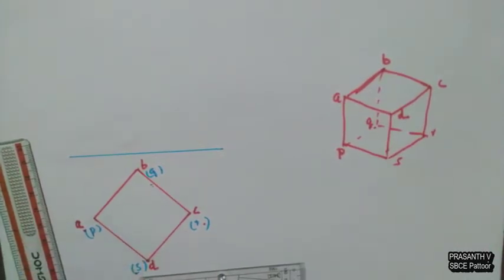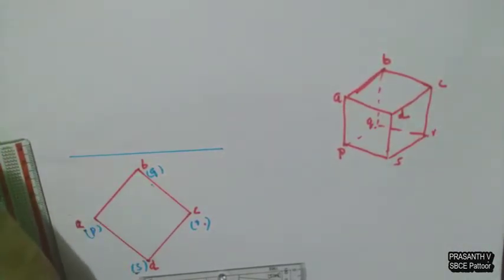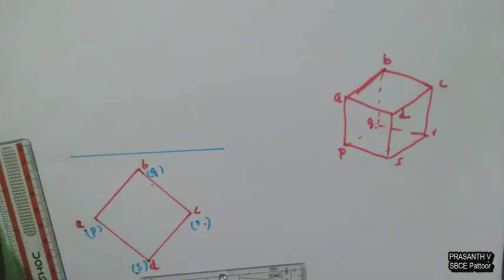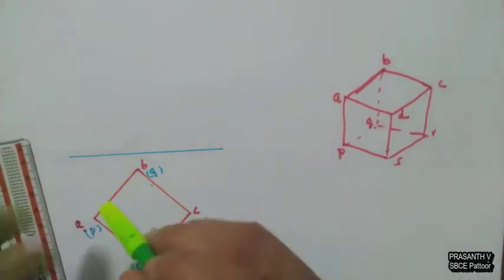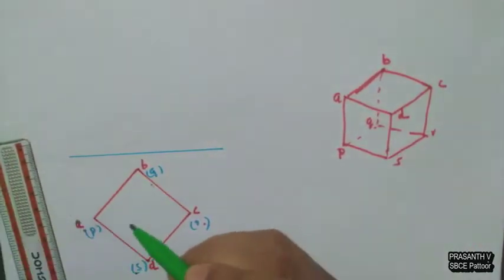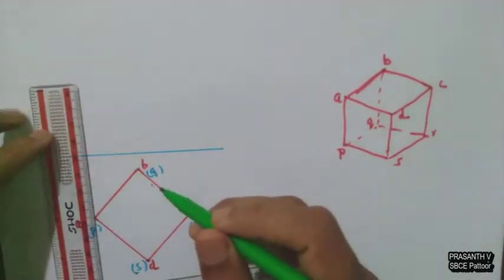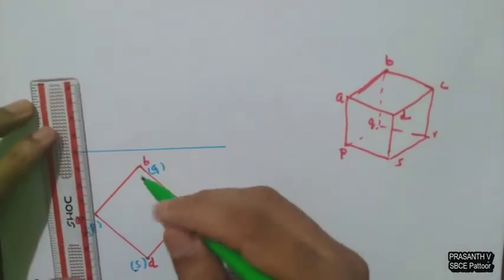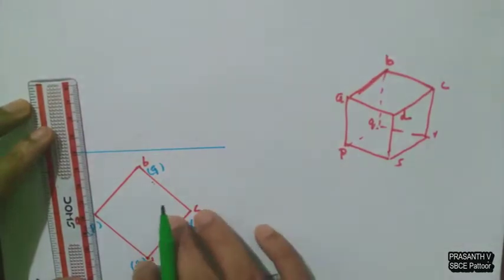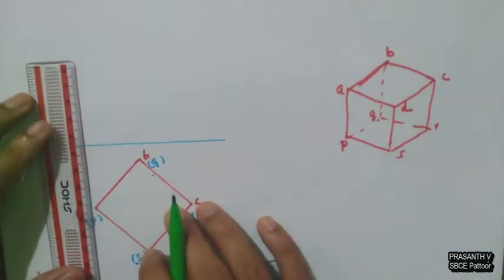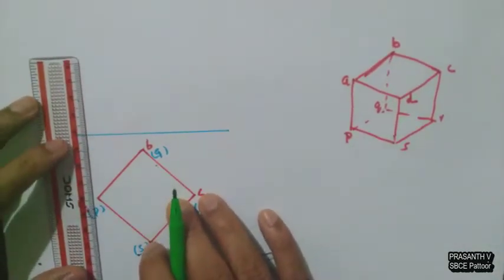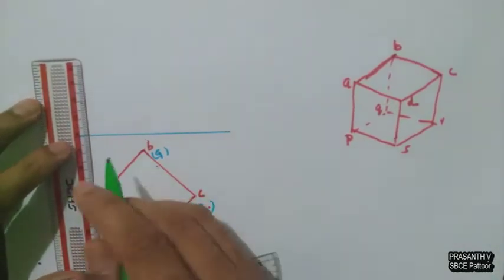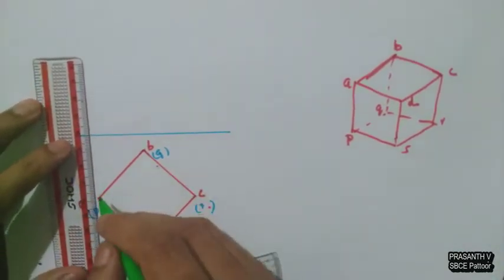Now just draw the front view of the cube. Since the side is 40mm, you have to take the height as 40mm.